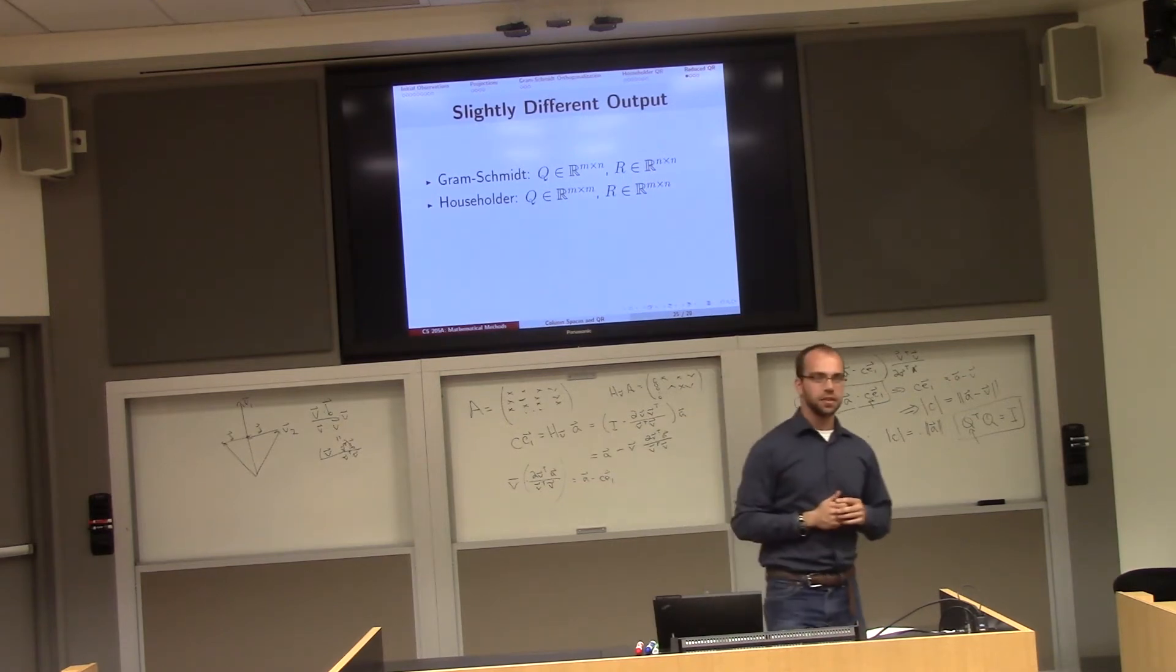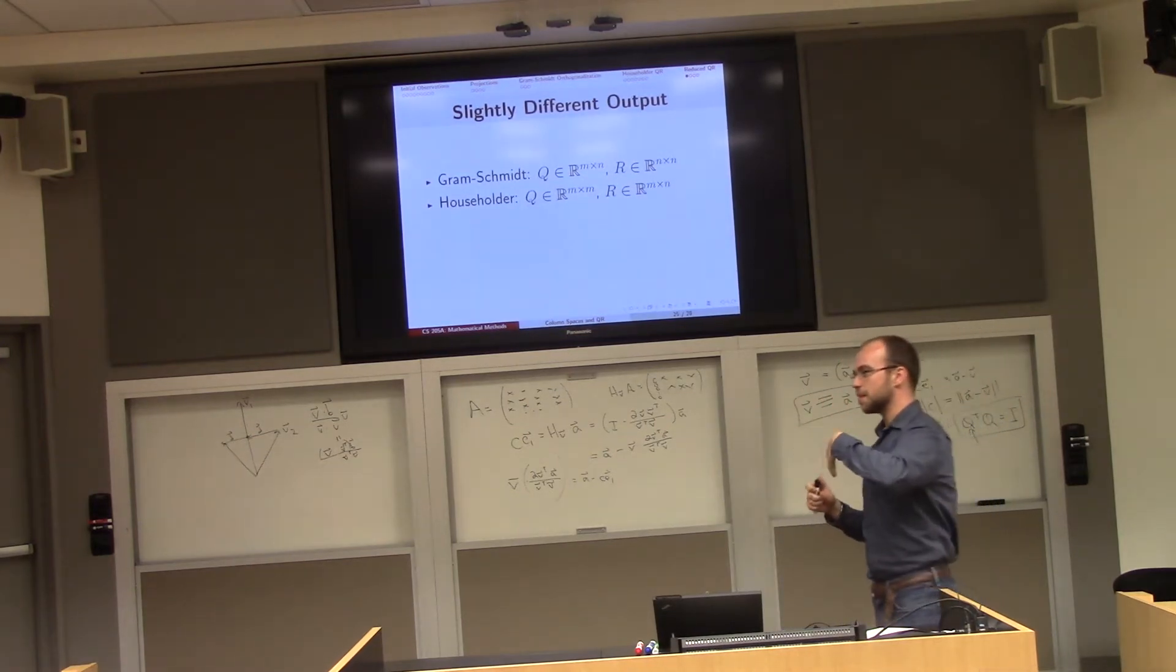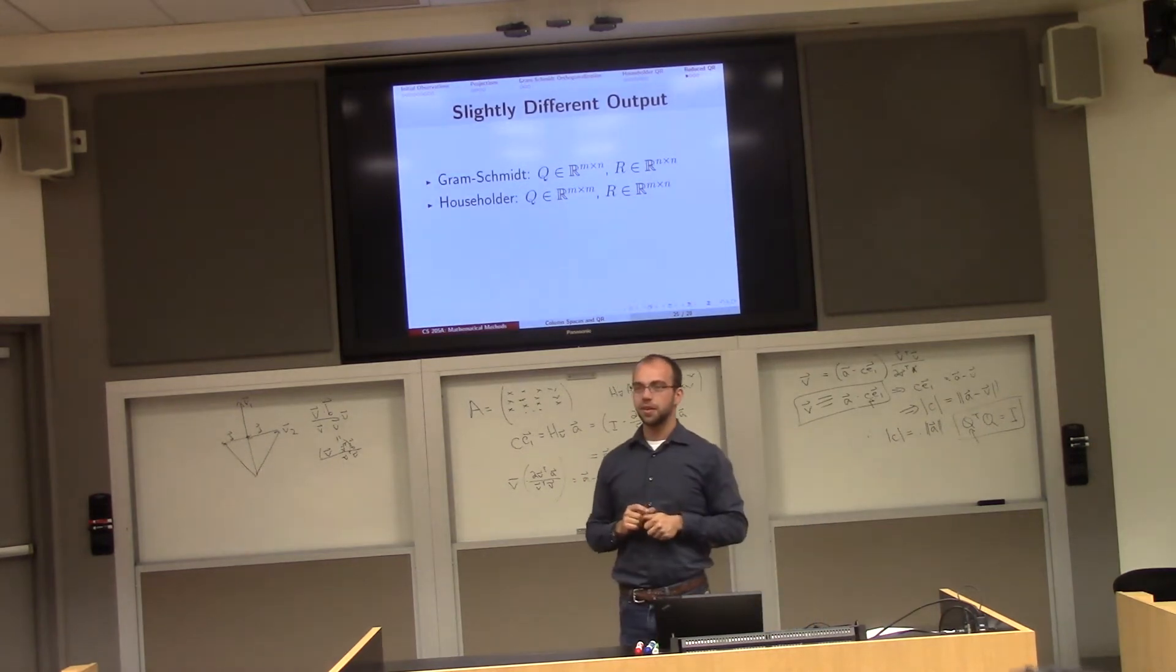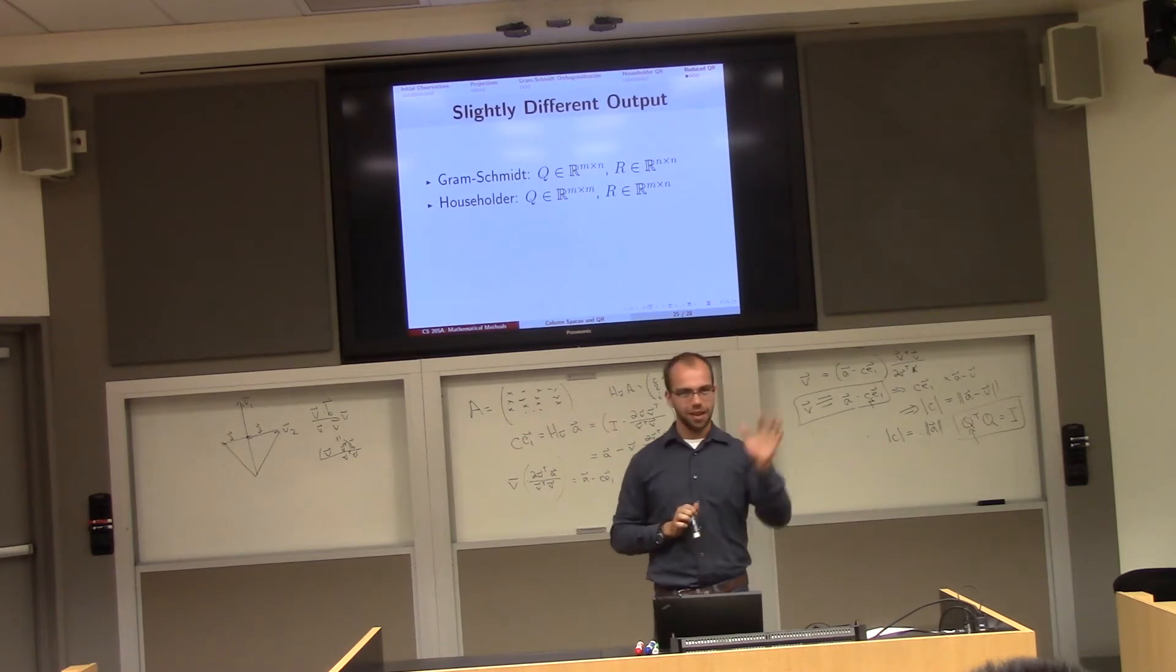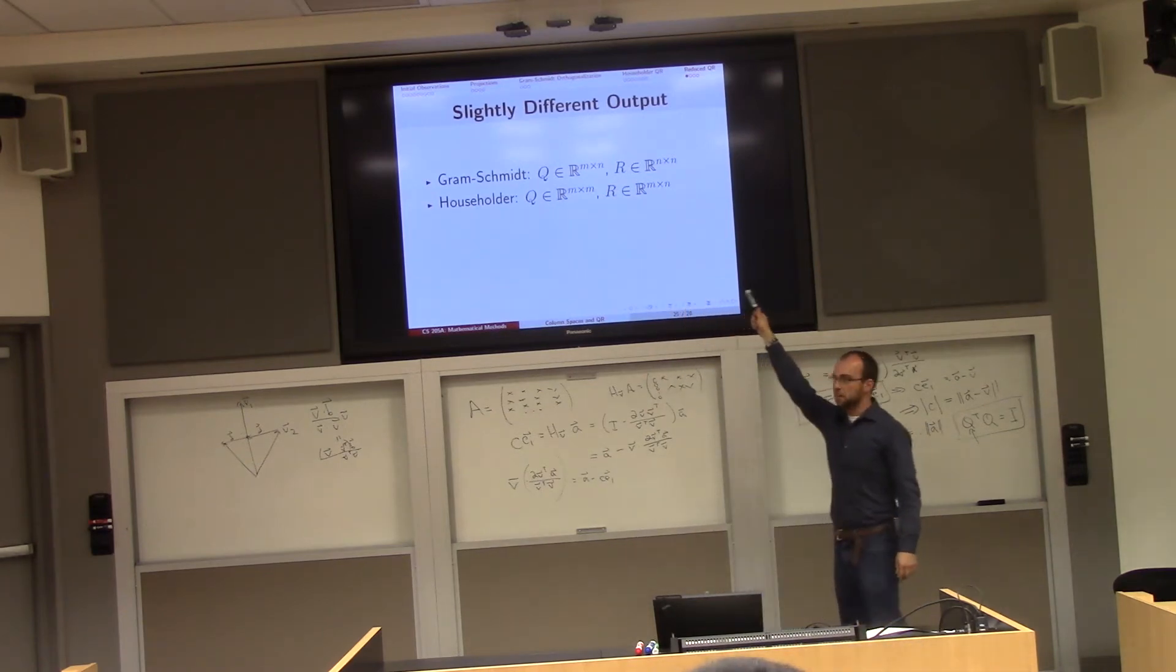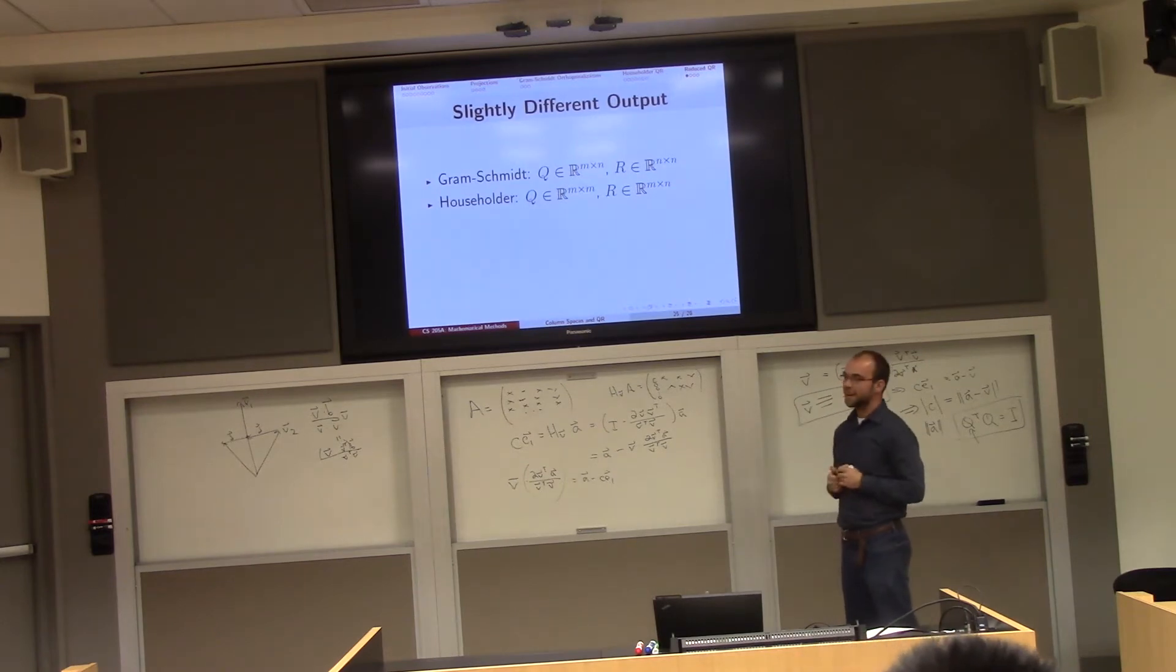So what did Gram-Schmidt do? He took A and he post-multiplied a bunch of times with a bunch of column operations until you got something orthogonal. So what is the size of Q? Well it's the size of A, because I took A and I post-multiplied a bunch of times by square matrices. In the end, Q is M by N, just like A is, and R is a bunch of products of upper triangular things. So they're all N by N, just square elimination matrices.